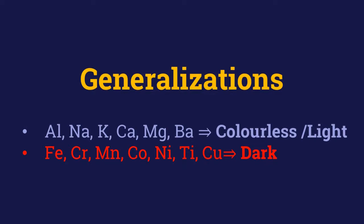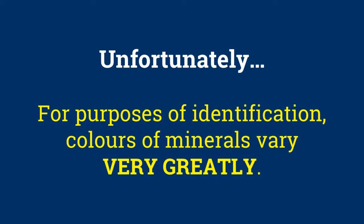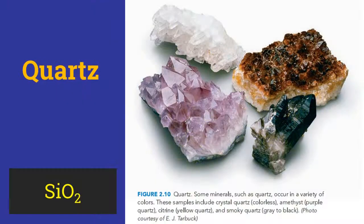Color of a mineral is often its most striking property but unfortunately colors of minerals vary very greatly. So much so that the color of a mineral may be purple, yellow, grey or it may be colorless, but the mineral may only be quartz. Quartz is composed of silicon dioxide and is commonly colorless but it is sometimes also found in a wide array of different colors.